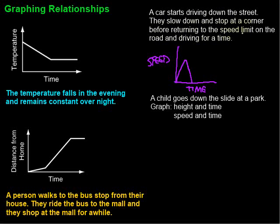Then they return to the speed limit on the road. So the speed goes up again. Then they drive for a while, so this part of the graph is horizontal — like cruise control — until they speed up or slow down again. Reading through: they start driving and speed up, slow down and stop at the corner, then return to speed limit and drive for a while.